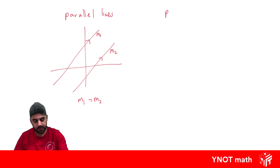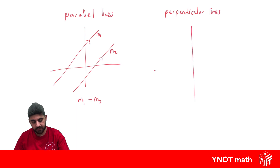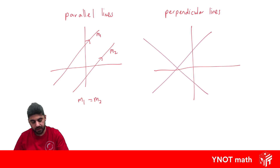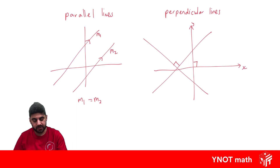What about perpendicular lines? Well, perpendicular lines do meet — we might have something like this and this, where they actually meet at right angles. Even the x and y axis are perpendicular to each other. And if two lines are perpendicular, let's say this one has gradient m1 and this one has gradient m2 — when we multiply the gradients together, we get negative one.